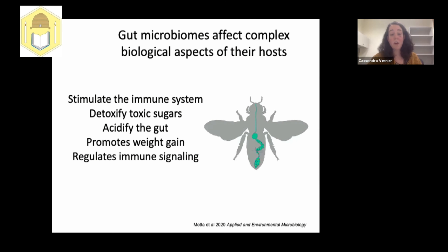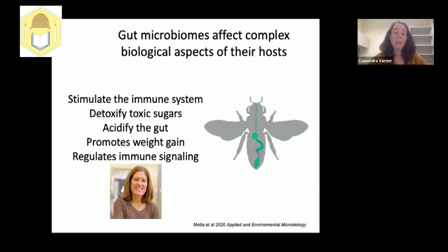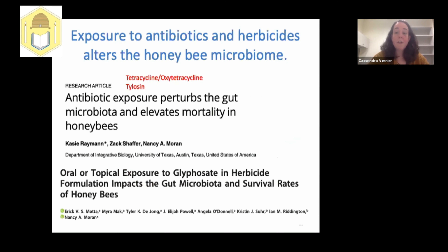Some components of the honeybee microbiome acidify the gut to limit invasion by pathogens that cannot survive in acidic environments. All microbes in the gut help promote weight gain and play a role in immune signaling. Work from Nancy Moran's lab at the University of Texas indicates that exposure to stressors such as antibiotics and herbicides — including glyphosate, the main component of Roundup — can alter the microbiome and lead to decreased honeybee survival.